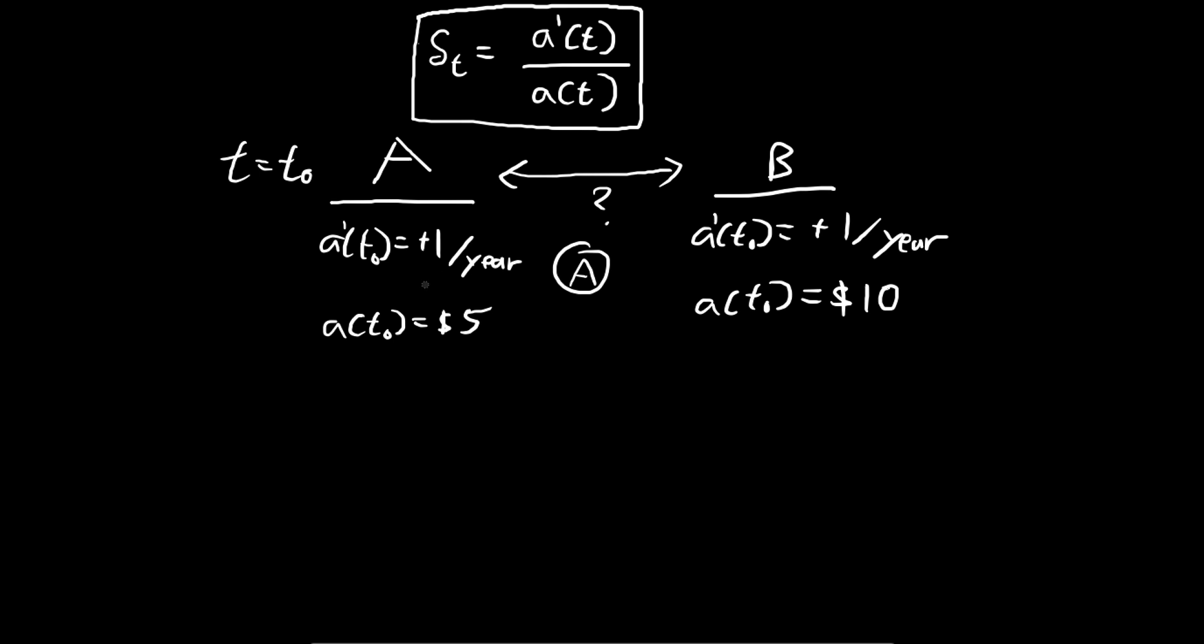When we consider which investment is better, normally we will consider how much it's growing, right? But in both of these cases, they're both growing at the same rate. So if they're both growing at the same rate, we start to compare how much investment we need to experience this growth. For A, we only need $5 to experience this growth, while for B, we need $10. Obviously A is much better than B because we need less money to experience this growth.